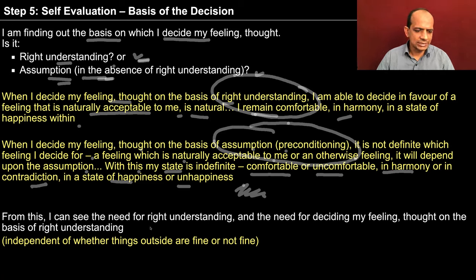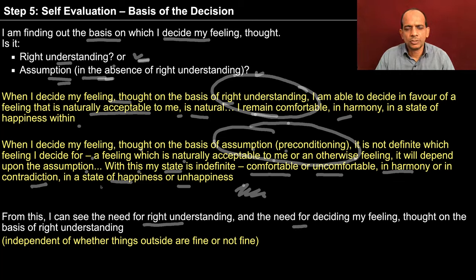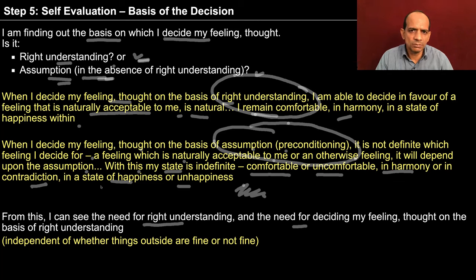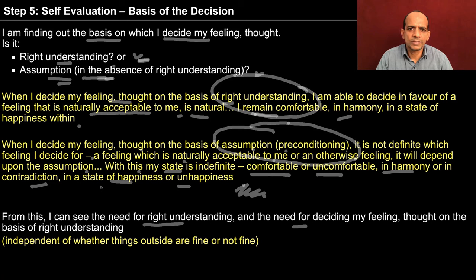From this I can see the need for right understanding and the need for deciding my feeling, my thought on the basis of right understanding. One important conclusion — the takeaway from this step — is that I am able to see the need to develop my right understanding. Because unless I understand things rightly, I am going to assume something which may be otherwise, and then my state of being is not definite. It can be comfortable or uncomfortable, and whether I am going to be happy or not is not definite.